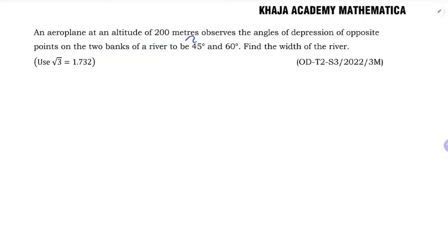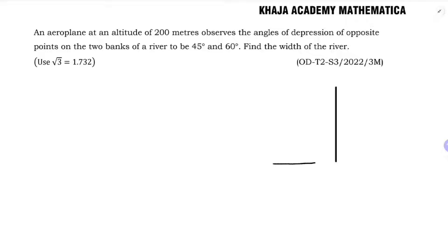An airplane at an altitude of 200 meters observes the angle of depression of opposite points on two banks of a river to be 45 degrees and 60 degrees. Find the width of the river. Here I'll take two banks A and B, and label the points A, B, C, and D, where CD is 200 meters.